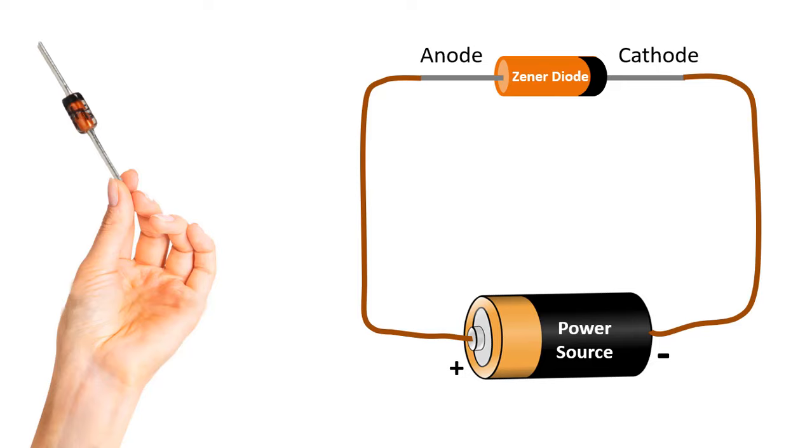Zener diode is a diode that keeps the voltage applied to its pins constant. When Zener diodes are connected to the circuit in the right direction, it works like a normal silicon diode. In other words, they start to flow current after 0.7 volts. But they are not used that way. They are used in reverse connection to the circuit.